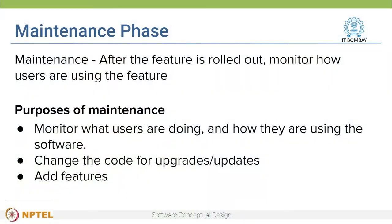We have additional resources which give more information regarding alpha and beta testing. After adequate testing, the feature is rolled out, but it's necessary to actually monitor how users are using the feature and keep examining the difficulties and errors they encounter. This is done during the maintenance phase. The purposes of the maintenance phase can be to monitor what users are doing and how they are using the software, to change the code for any upgrades and updates, or to add features to the existing software.